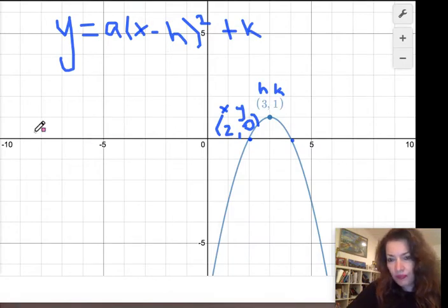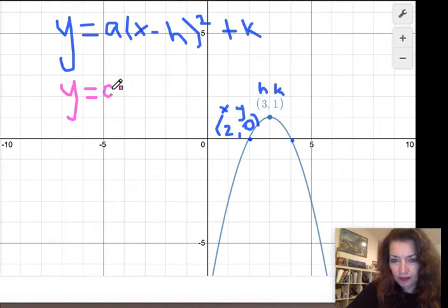I'm going to first plug in the vertex. So that would be y equals a, and the h value is 3, so it will be x minus 3 squared.